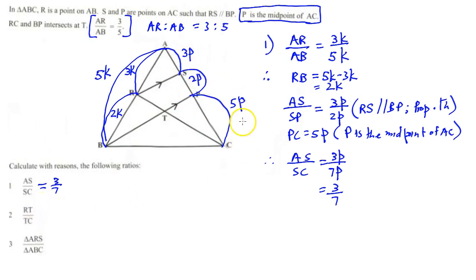So we've already done all our calculations and it's quite easy to see that RT over TC would be 2T and that would be 5T. Okay, because RS is parallel to BP.